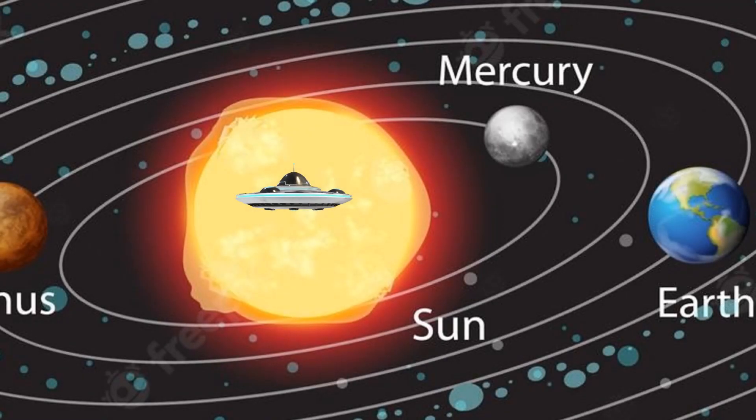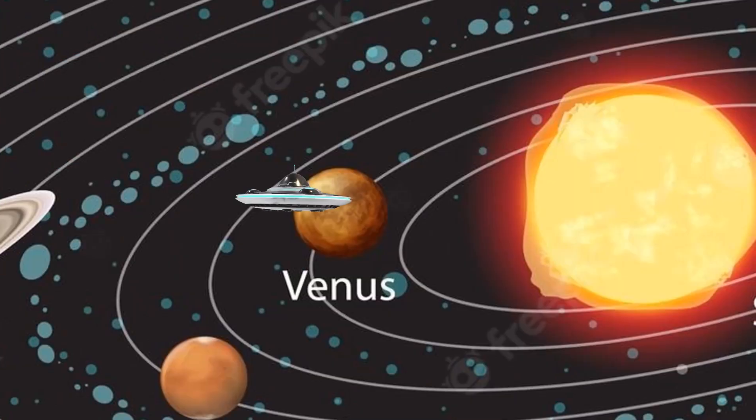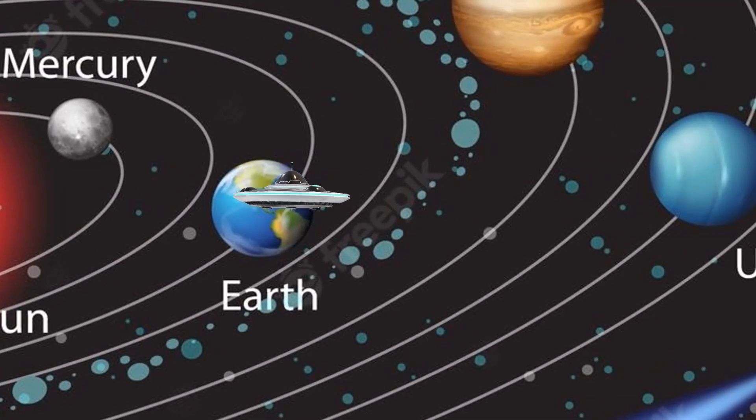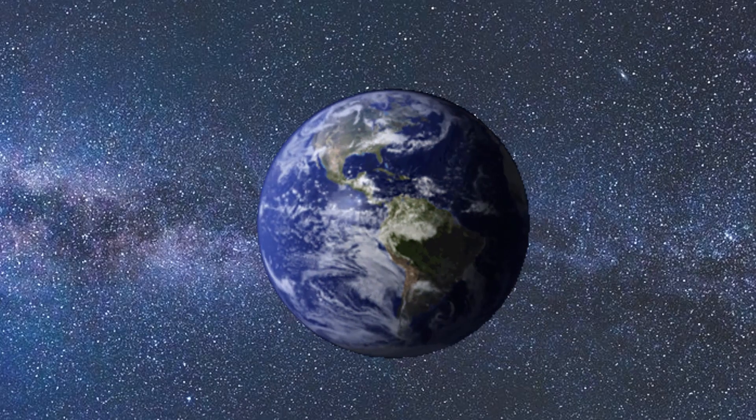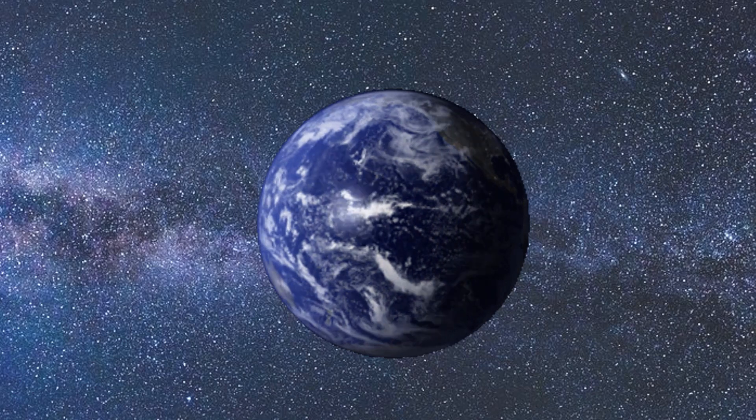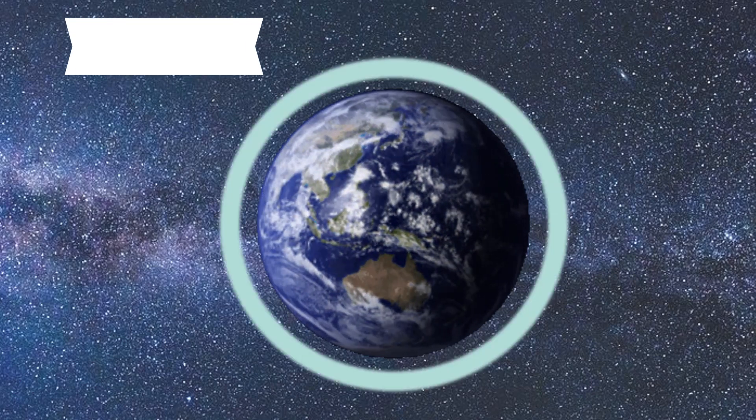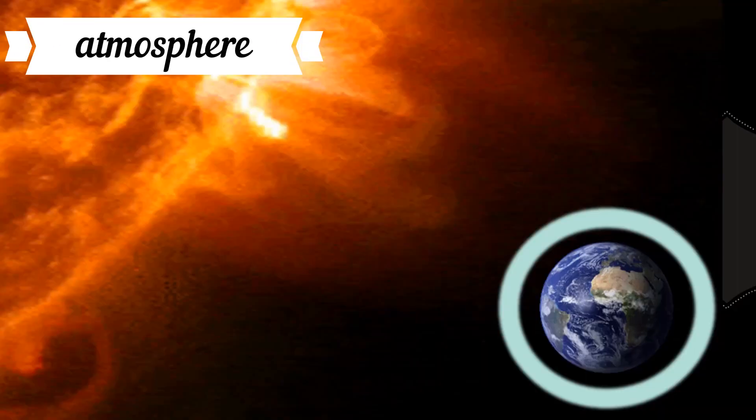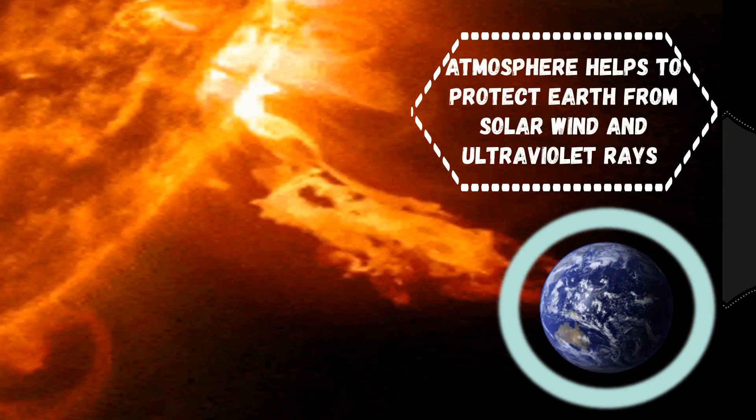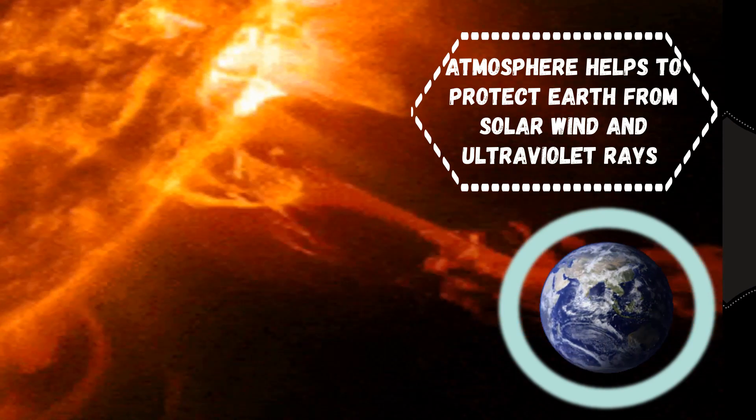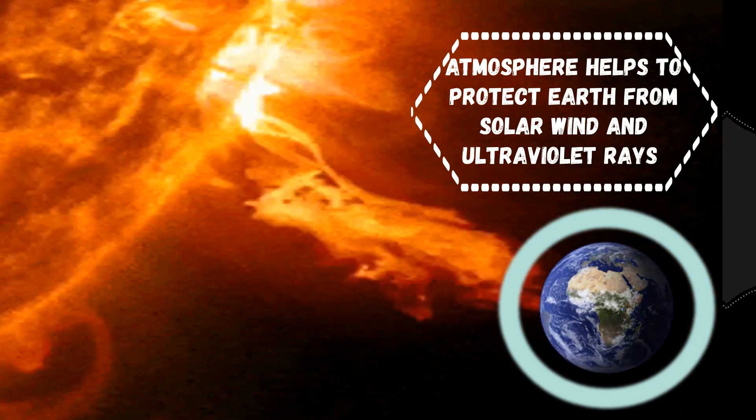We have learned enough about Venus. Then, we will go to the third planet from the Sun, Earth. Earth has a layer of air known as atmosphere. The atmosphere helps to protect Earth from solar wind and ultraviolet rays in space.